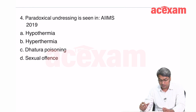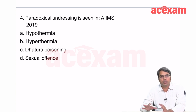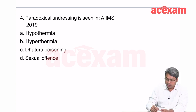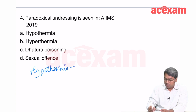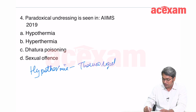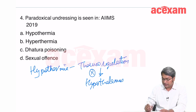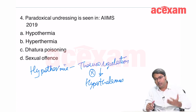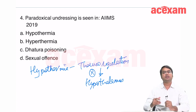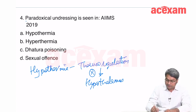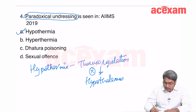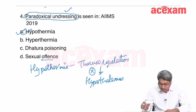Paradoxical undressing, asked in AIIMS 2019, is associated with hypothermia. When a patient suffers from generalized hypothermia, thermoregulation by the hypothalamus is not done properly, so the patient feels warm despite being hypothermic and starts removing their clothes — this is paradoxical undressing. The scene of crime may look like a sexual offense, but in sexual offense, undressing is not paradoxical.